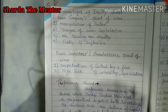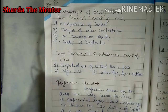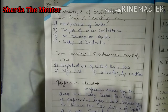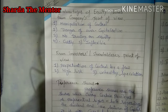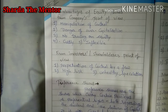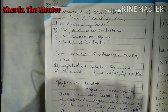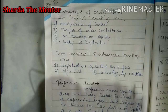When we talk about the company's point of view, the first point is manipulation of control. As we already know, equity shareholders have all the voting rights, so equity shareholders have the power to take decisions with no interference from the preference shareholder side. The whole control of the company is in the hand of equity shareholders, and there is a possibility that they will take decisions which will be beneficial for equity shareholders only.